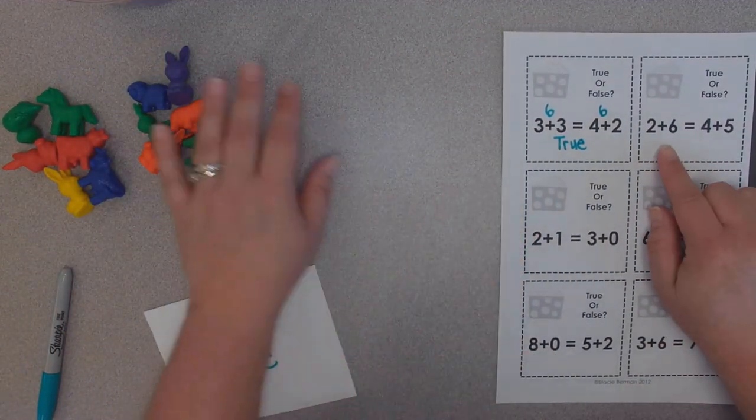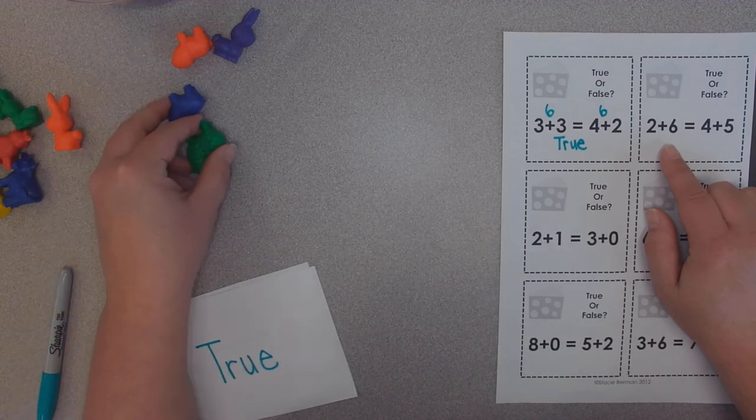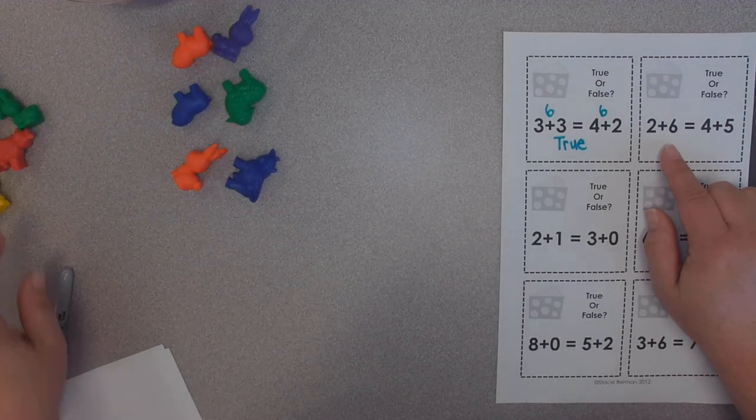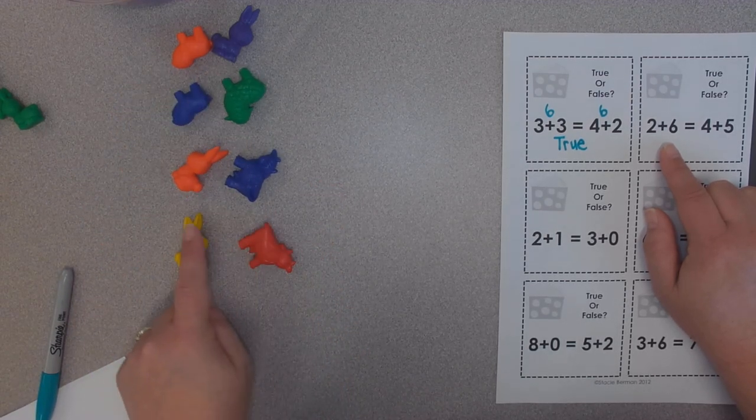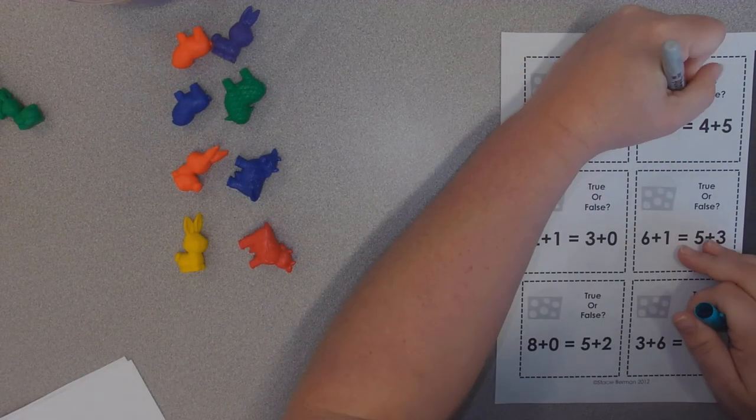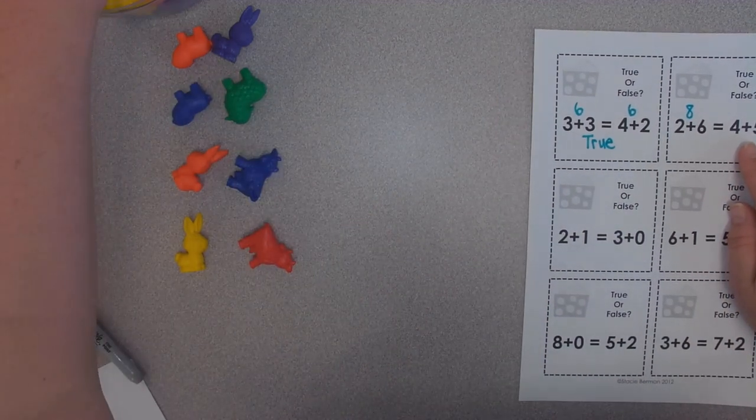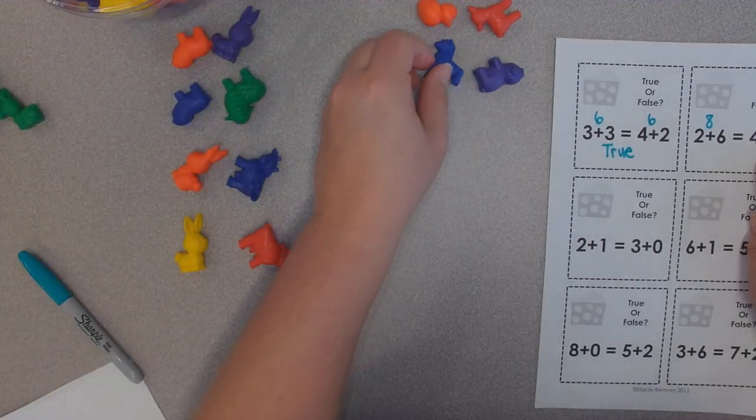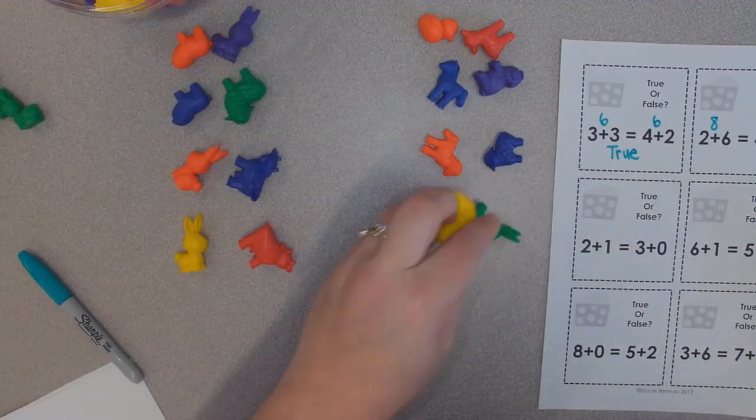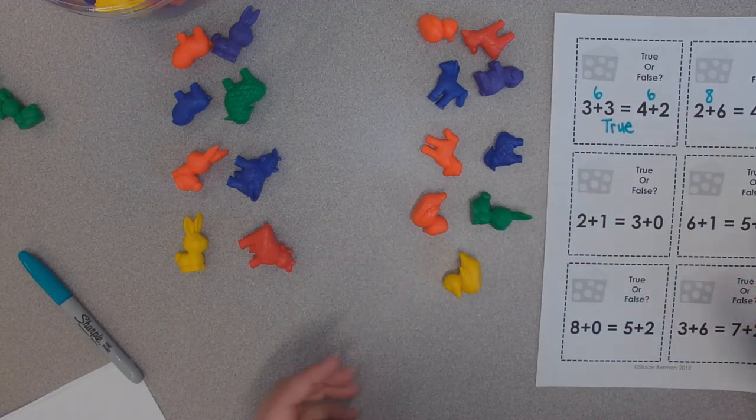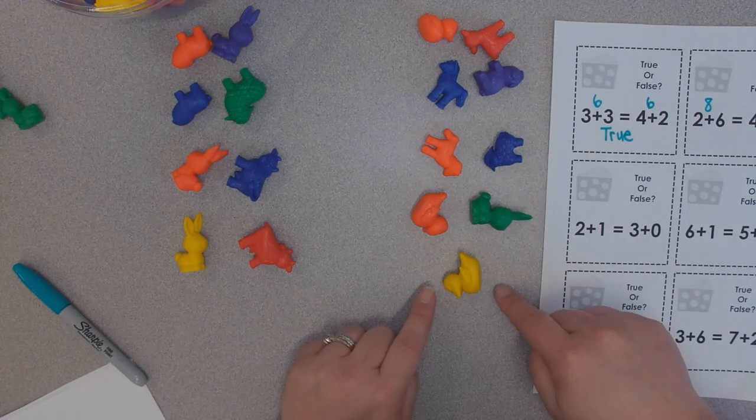Okay, over here I have 2 and 6. So let's start with 2 and we will put down 6 more. If I am going to add this up, I will start with the big number 6, 7, 8. So on this side we have 8, I will write that down. Let's build the other side, 4 and 5, 1, 2, 3, 4, 5. Okay, just from looking at it, I can tell this is not equal because this is the same but this is different. So the difference is this 1.